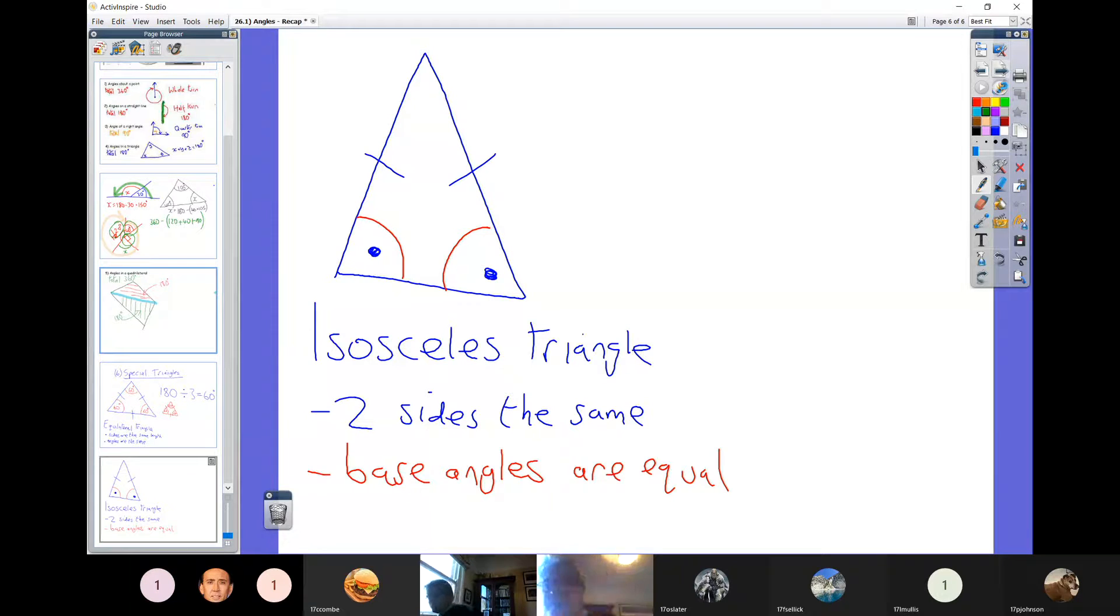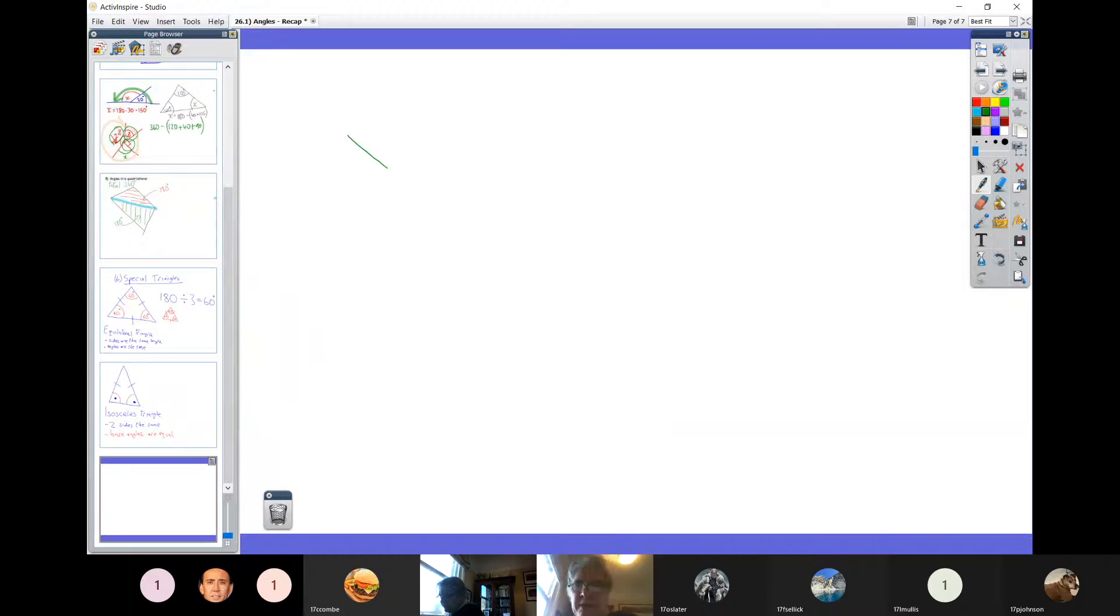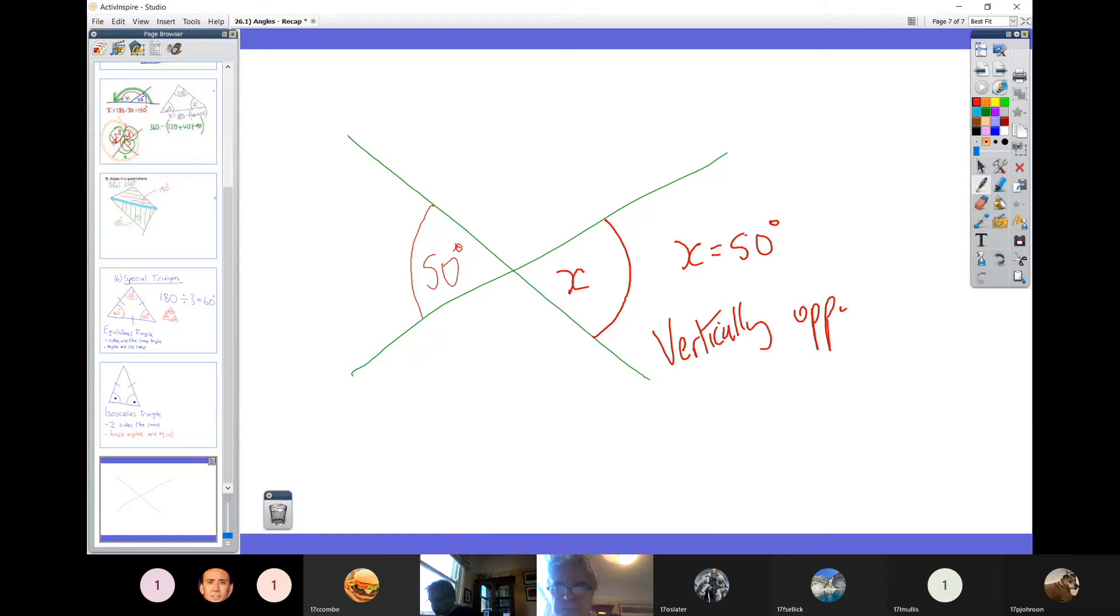And then finally, the last point I wanted to make. If you've got a couple of lines, a couple of lines here. That angle there, let's say that angle there was 50 degrees. That angle over there, X, will also be 50 degrees. Any opposite angles are the same. When you've got two lines crossing, creating a cross, the opposite angles are equal. And again, if they asked you to explain why X was 50 degrees here, you must go and give the reason that vertically opposite angles are equal.